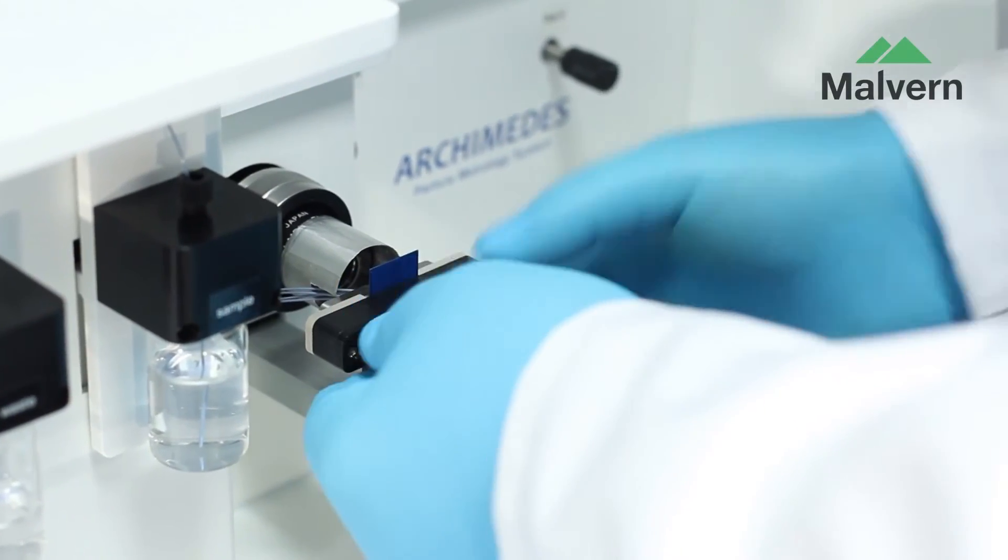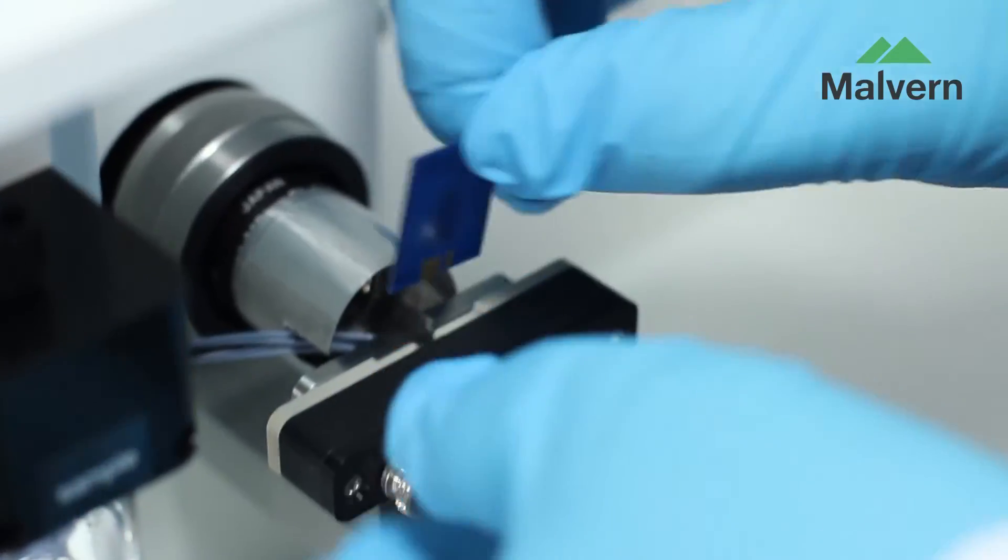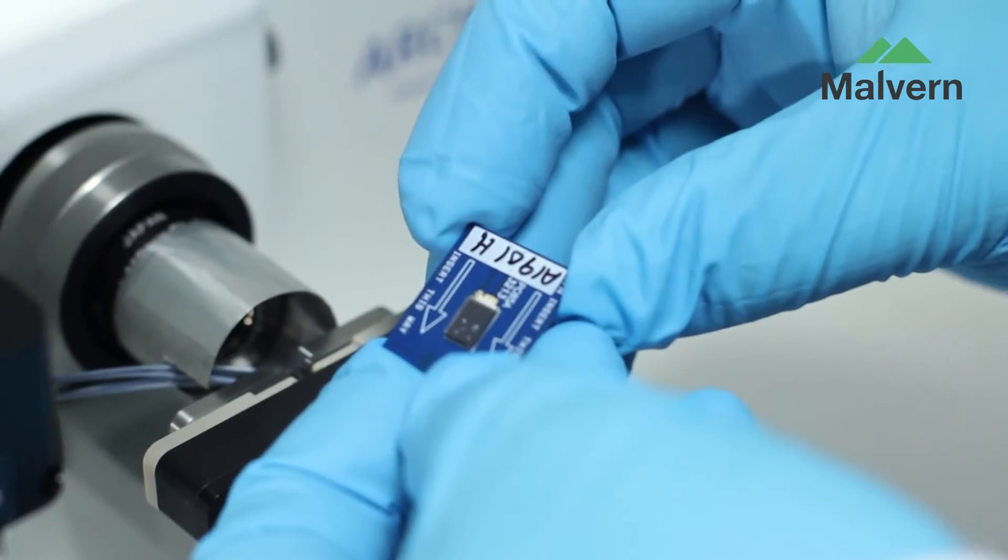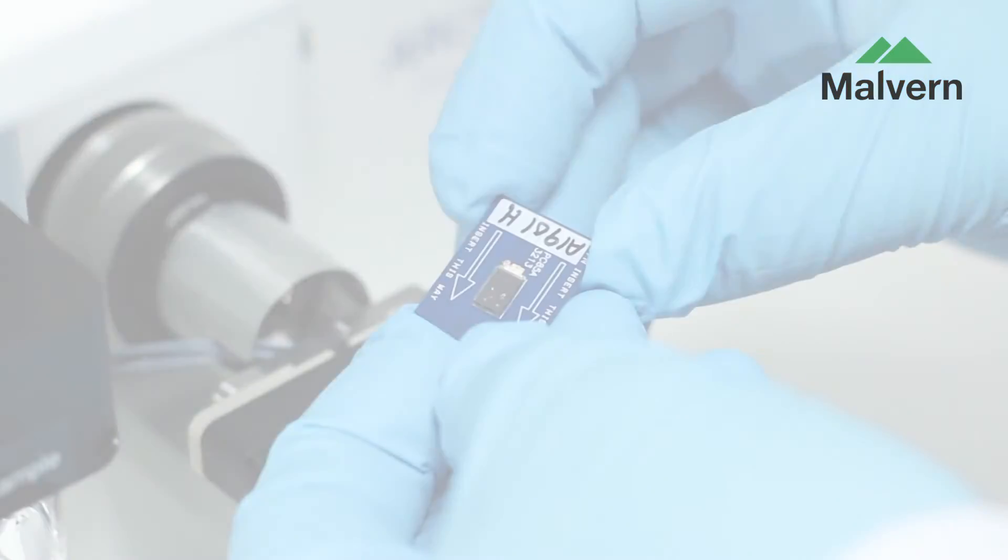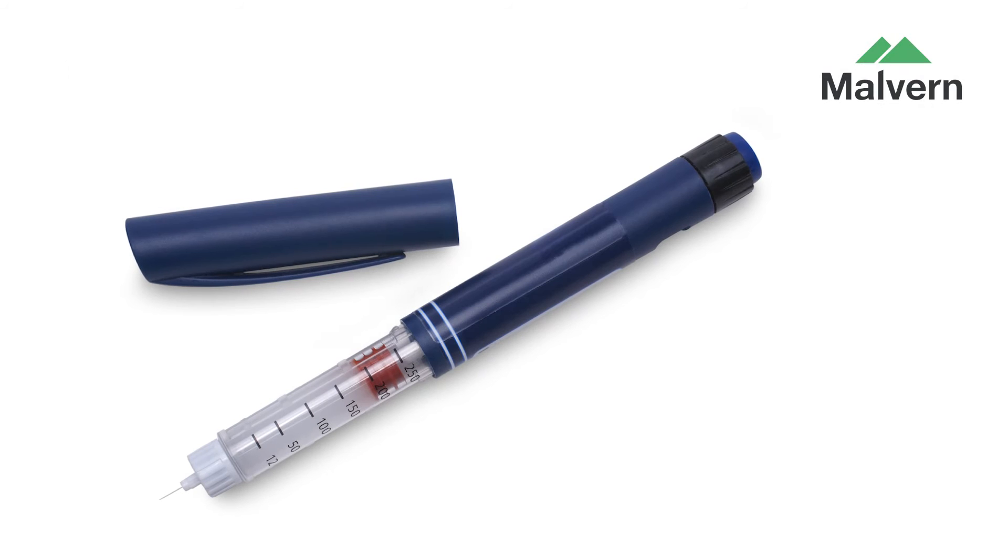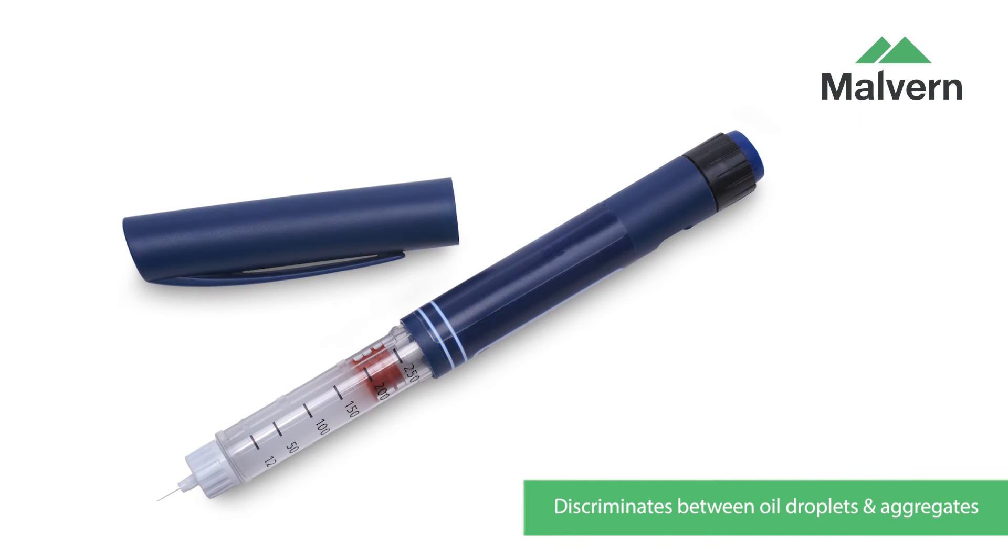The ability of Archimedes to quickly and simply differentiate protein aggregates from silicon oil droplets, which often transfer to the product from the inside of a vial or pre-filled syringe, means that you're measuring your aggregation accurately without counting contaminating particles.